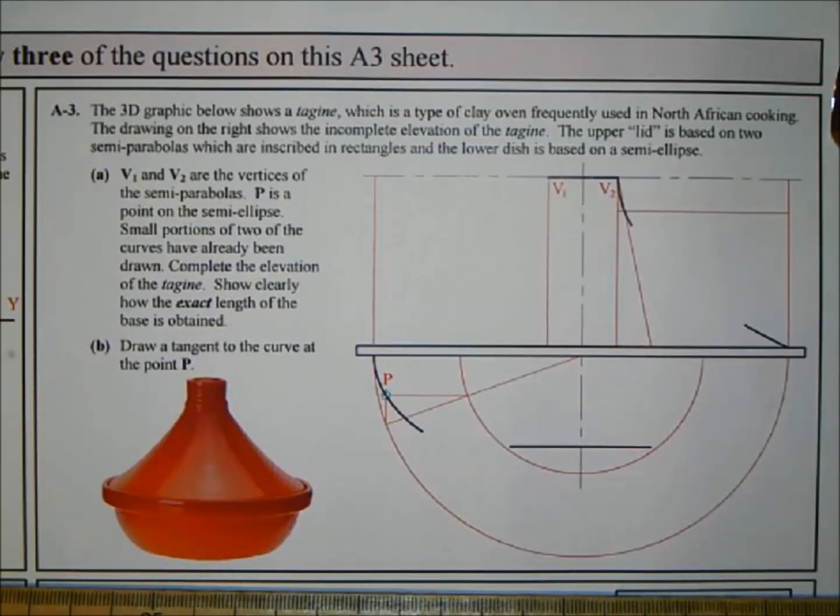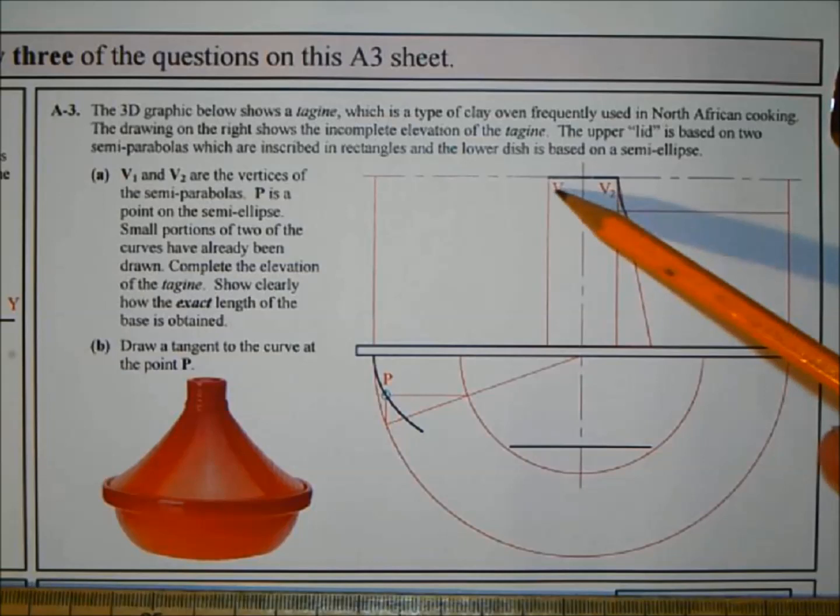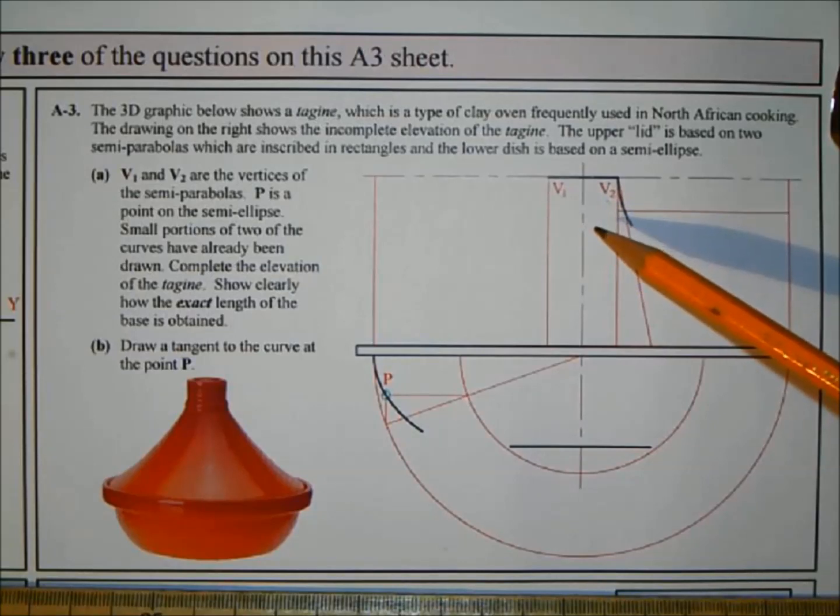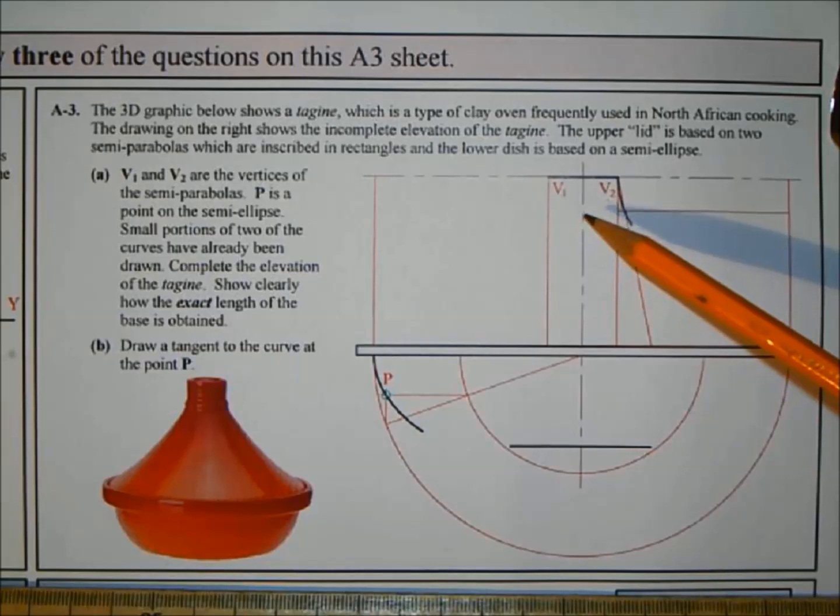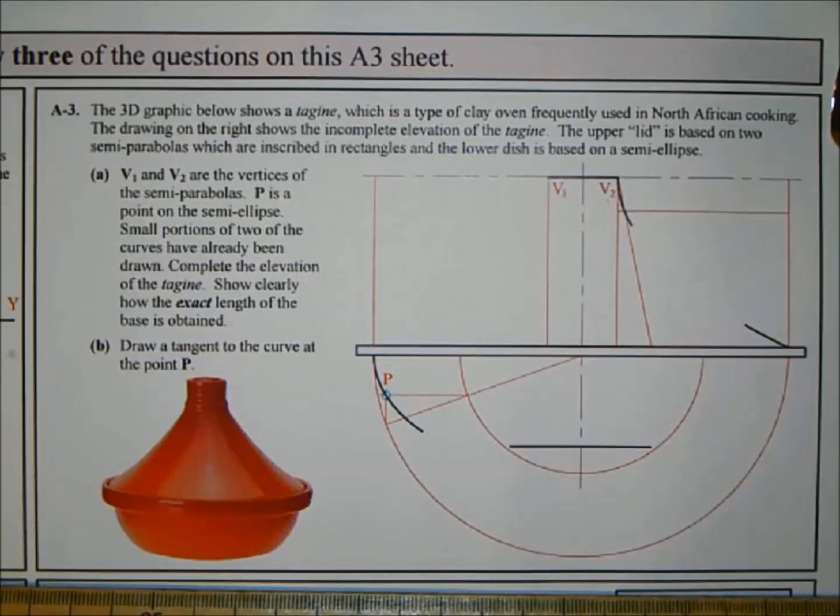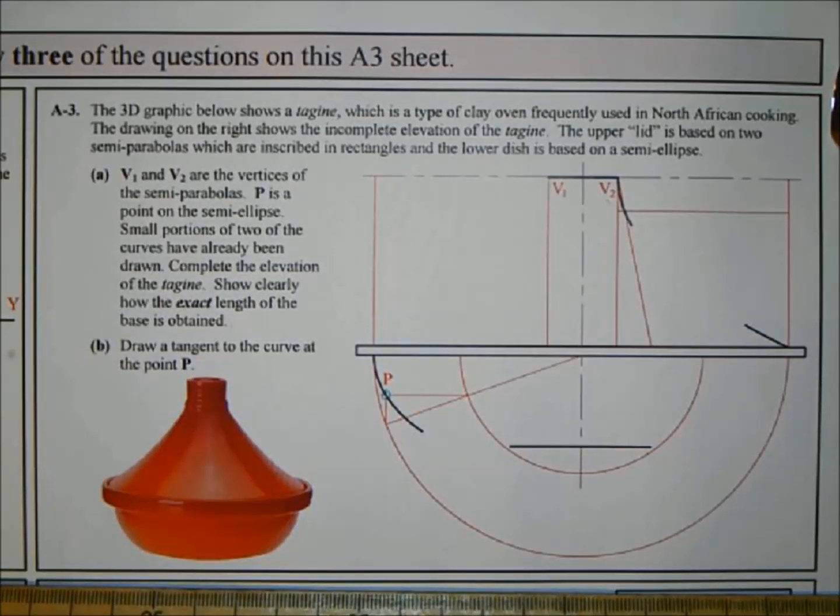Ellipse and parabola question. We start with part A. V1 and V2 are the vertices of the semi-parabolas. P is a point on the semi-ellipse. Small portions of two of the curves have already been drawn. Complete the elevation of the tagine, showing clearly how the exact length of the base is obtained. So what we're going to do is look at the drawing first and see what they've given you.